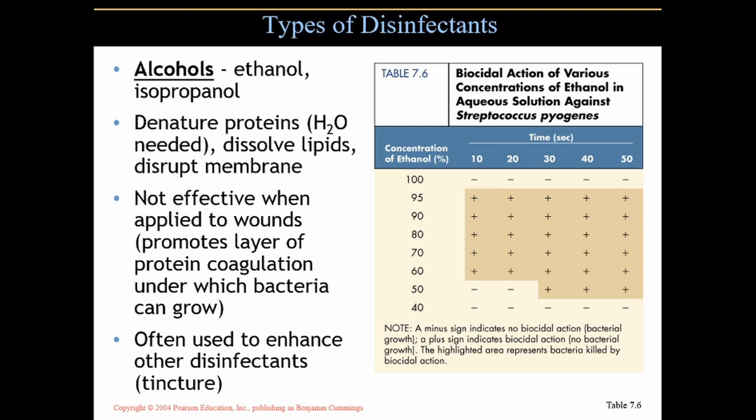Alcohols like ethanol or isopropanol — rubbing alcohol — denature proteins. Water is needed, though; there needs to be water with the alcohol. They dissolve lipids, which will disrupt membranes. They are not effective when applied to wounds — not only does it hurt, but it promotes a layer of protein coagulation from proteins in the blood, under which bacteria can grow. That layer of protein acts like an umbrella shielding bacteria from the alcohol, allowing them to grow without its negative effects.